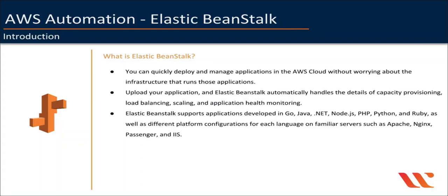Elastic Beanstalk supports applications developed in different programming languages such as Go, Java, .NET, Node.js, PHP, Python, and Ruby, as well as different platform configurations for each language, such as Java 8, Java 7, etc., on familiar servers such as Apache or Apache Tomcat, or Nginx, or Passenger, IIS, etc.